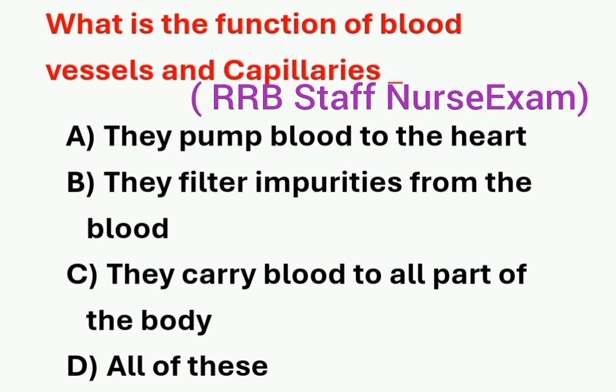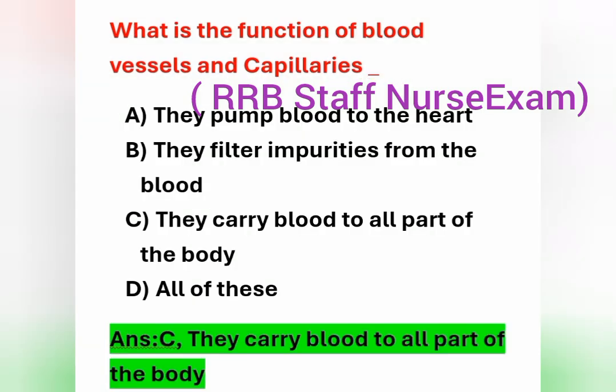Options: Option A – they pump blood to the heart. Option B – they filter impurities from the blood. Option C – they carry blood to all parts of the body. Option D – all of these. The main function of blood vessels and capillaries is to carry blood to all parts of the body. Option C is the correct answer.